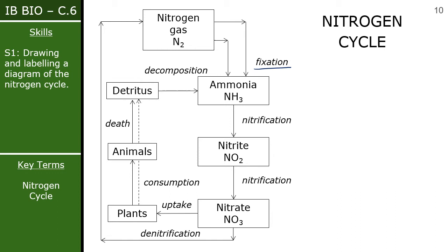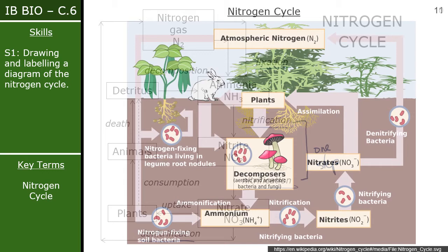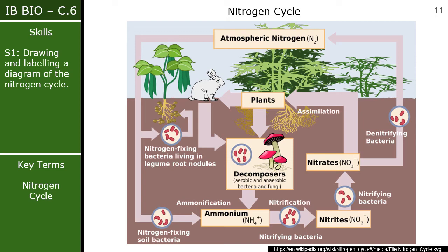To summarize the key terms: fixation converts atmospheric N₂ to usable forms; nitrification converts ammonia to nitrate; denitrification converts nitrate back to nitrogen gas. Plants uptake nitrogen, animals consume plants, detritus is the remains of dead plants and animals, and decomposition releases nitrogen back into the soil. While some terminology is new, the overall process is logical and makes sense when thought through step by step.